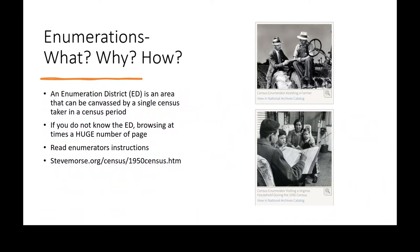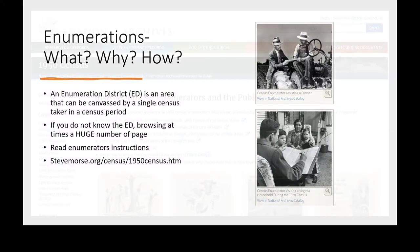The enumeration district and the enumerator instructions are important. There is a website — SteveMorse.org, also in your handout — to help you find enumeration district numbers. One basic way is to find the address in the 1940 census or try a phone book, city directory, or a document near 1950 that gives you the address. The address is the key to getting the enumeration district.